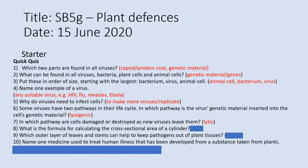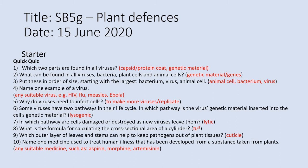What is the formula for calculating cross-sectional area? From maths, it's pi r squared. Which outer layer of leaves and stems can help keep pathogens out of the plant tissue? It is the cuticle — you could also put the epidermis for that. And name one medicine used to treat human illnesses that's been developed from a substance taken from plants: aspirin or artemisin, but you could also have morphine, which comes from the poppy plant.